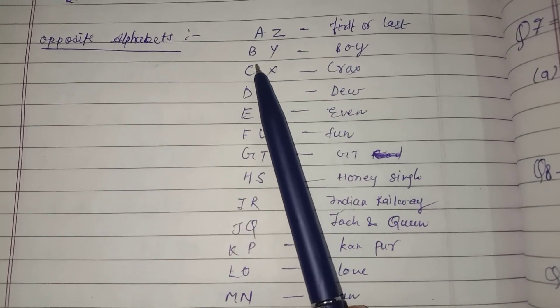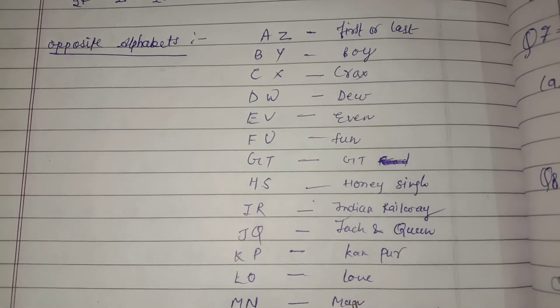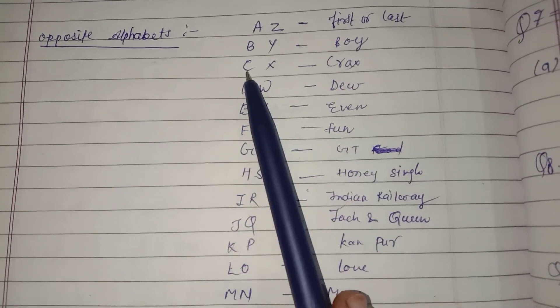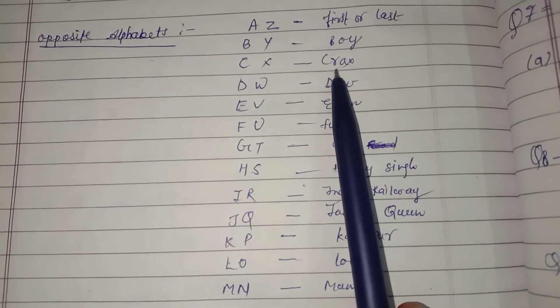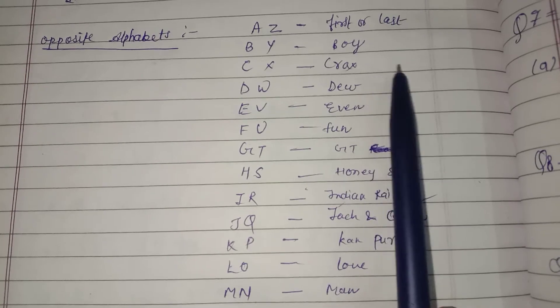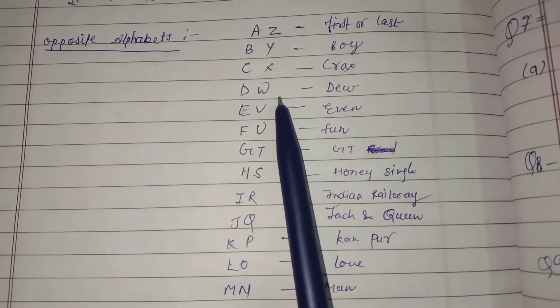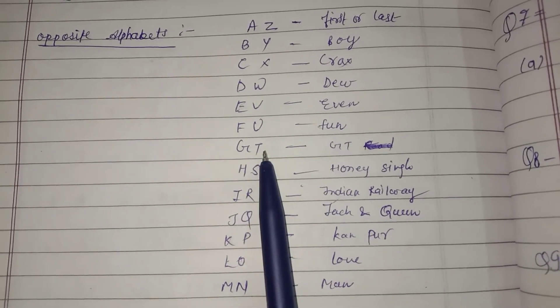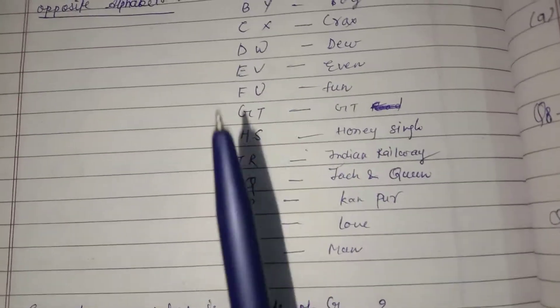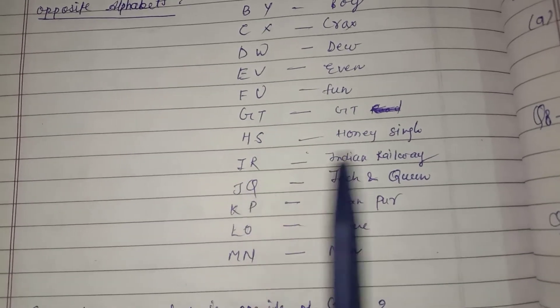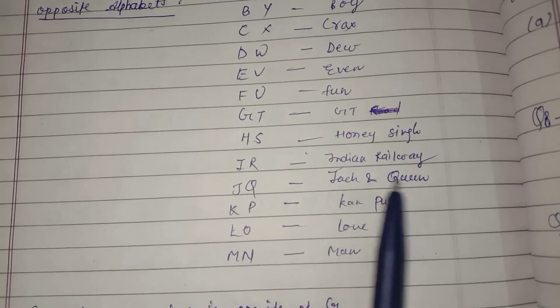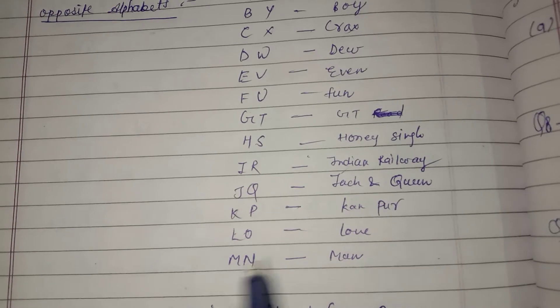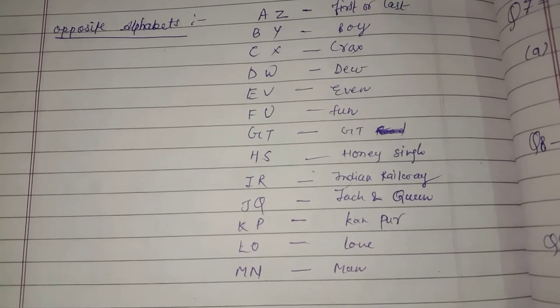Now I will show you a way to remember opposite words. You can learn B to opposite is Y with 'boys'. C to X is 'cracks'. D to W is 'dew'. E to opposite V is 'even'. F to opposite U is 'fun'. G and T is 'GT Road'. H to opposite S is 'Honey Singh'. I, R is 'Indian Railway'. J, Q is 'Jack and Queen'. K, P is 'Kanpur'. L, O is 'Love'. M, N is 'Men'. This was a trick for opposite letters.